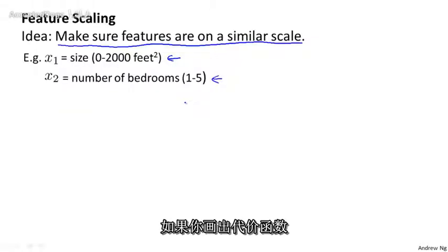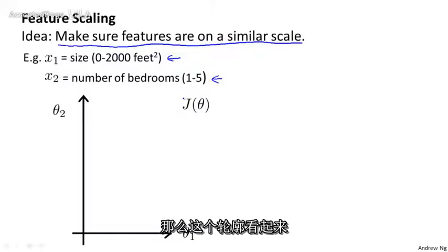If you plot the contours of the cost function J(θ), then the contours may look like this, where J(θ) is a function of parameters θ0, θ1, and θ2. I'm going to ignore θ0, so let's forget about θ0 and pretend it's a function of only θ1 and θ2.